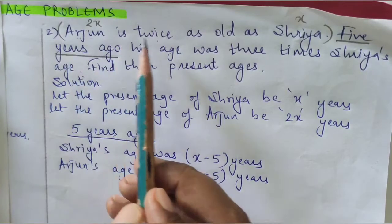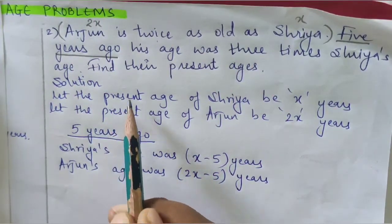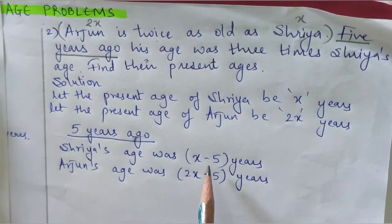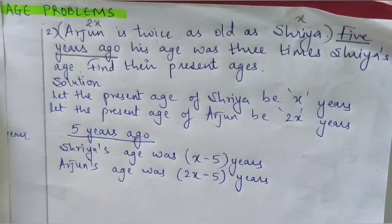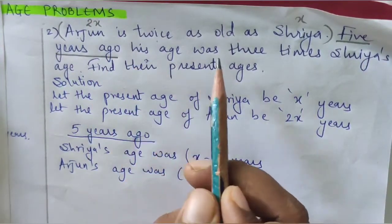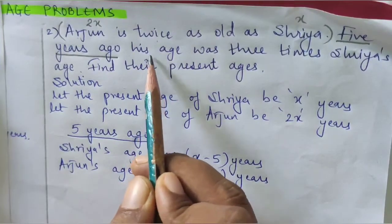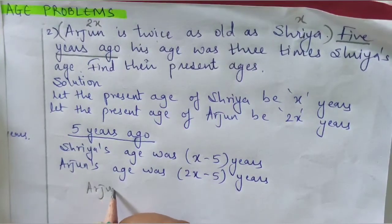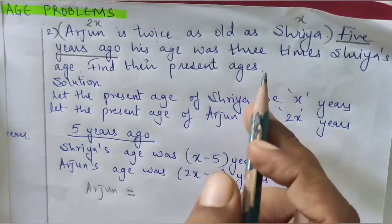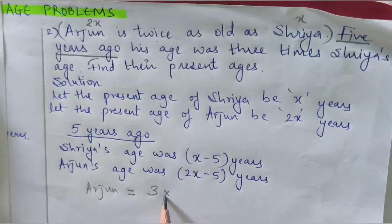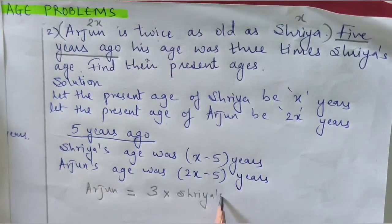From just the first statement we got the present ages of Arjun and Shriya, and from '5 years ago' we subtracted 5 from their present ages. The next condition given is: 5 years ago Arjun's age was 3 times Shriya's age. So 5 years ago Arjun's age equals 3 times Shriya's age.